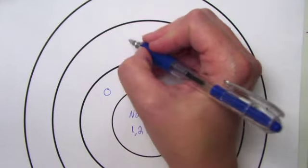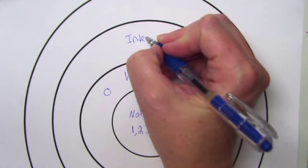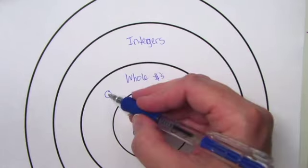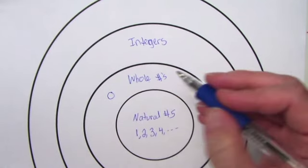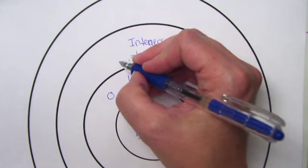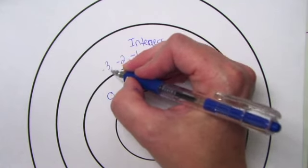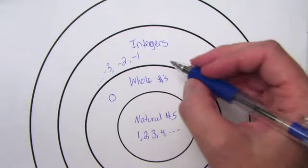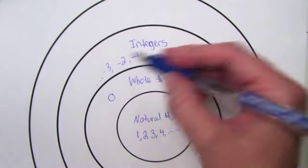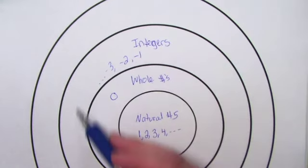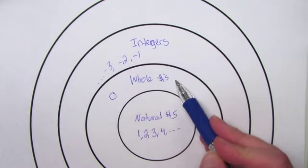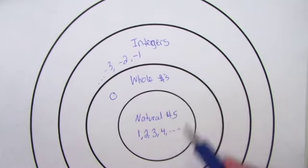When we come up to integers, this is the next level up. Those include whole numbers and natural numbers — so we have 0, 1, 2, 3, 4, etc. And then this time we also add in negative 1, negative 2, negative 3, and so on, all the way to negative infinity. So integers include the negative numbers, 0 from whole numbers, and all the natural numbers.